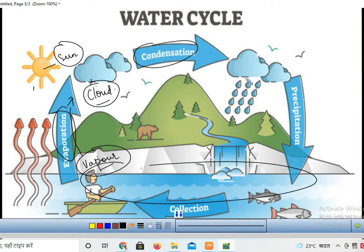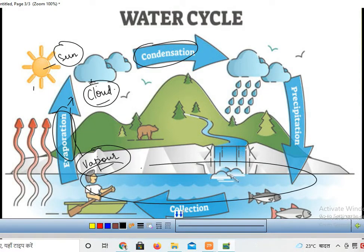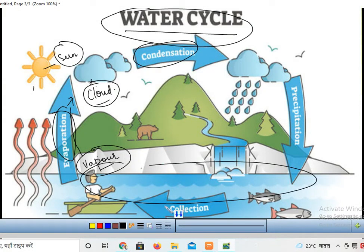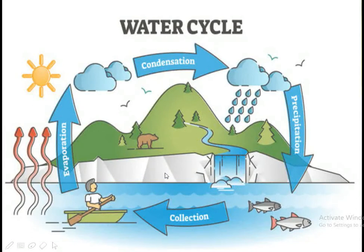The vapors get converted into water droplets. These water droplets fall down on the earth — this is precipitation — and again this water reaches different water bodies like rivers, lakes, and seas. Again this process keeps occurring. That's why it is called the water cycle. The steps involved are: collection, evaporation, condensation, and precipitation. So this is the water cycle.